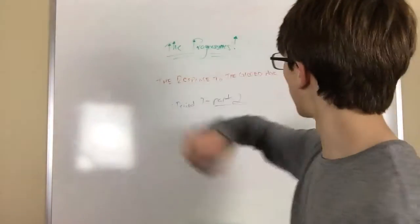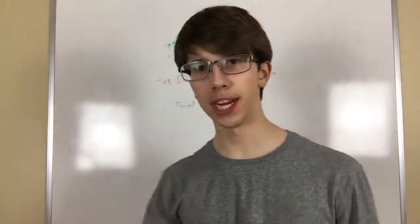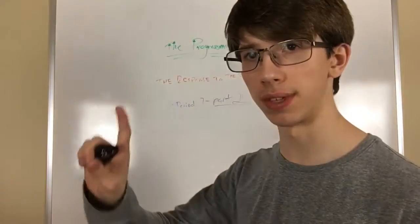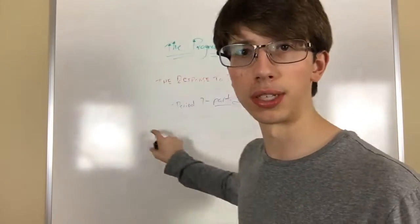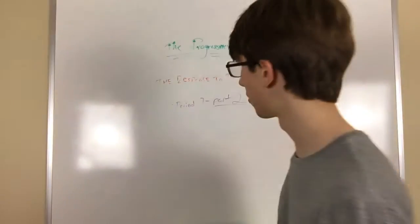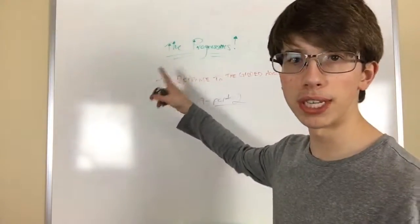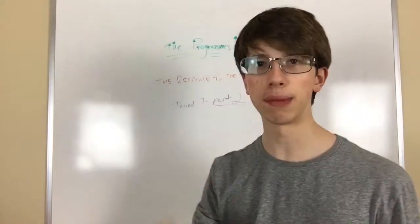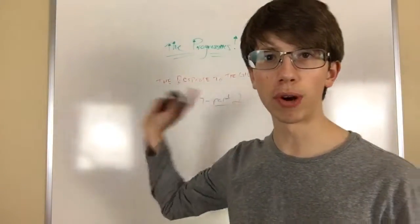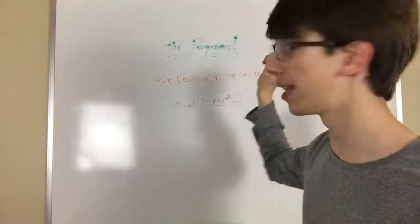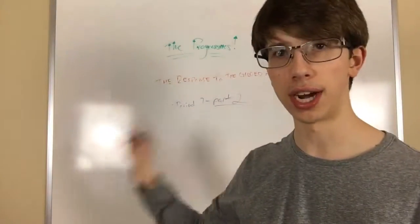Now let's get into the Progressives, which is Period 7, Part 2. Period 7 is from 1890 to 1917, 1890 being the turn of the century, meaning it's the introduction into the Depression of 1893, otherwise known as the Panic of 1893. The Progressive Era and movement is actually a response to the Gilded Age politics and policies, as well as a continuation of the reforms and advocations that the populace had during the Gilded Age era.